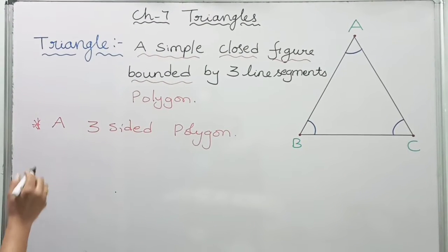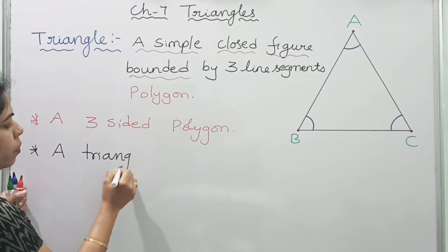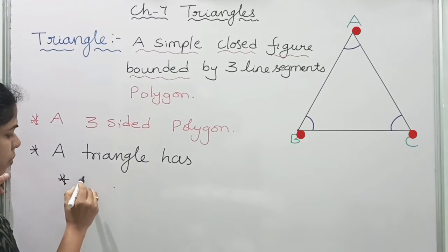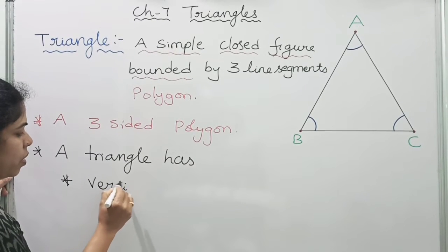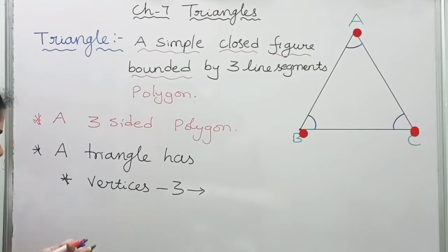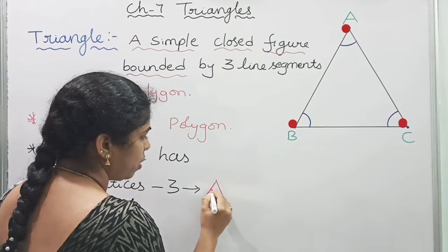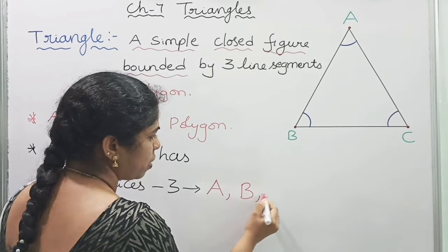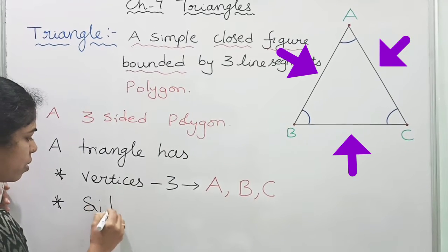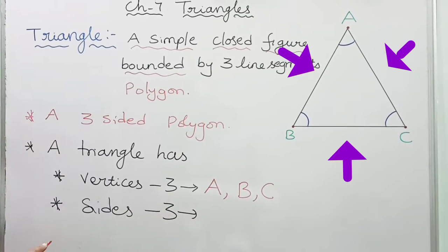The parts of a triangle are: vertices — a triangle has three vertices, which are A, B, and C. Next are sides — a triangle has three sides: AB, BC, and CA.